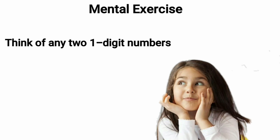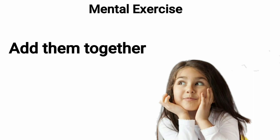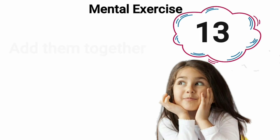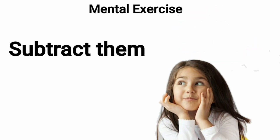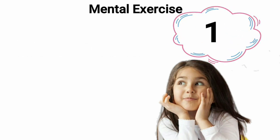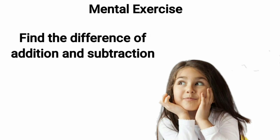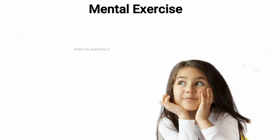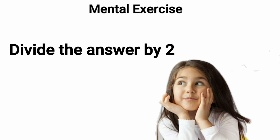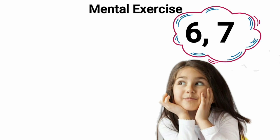Think of any two numbers having one digit. Okay ma'am, I have added these numbers. Now also subtract the numbers. I have done my subtraction ma'am. Find the difference of addition and subtraction. Done ma'am. Now divide the answer by two. The answer is the smaller number you had thought. Yes ma'am, I have thought of the numbers six and seven.